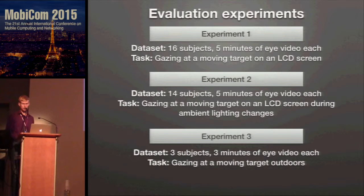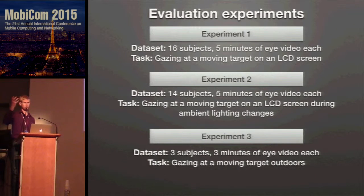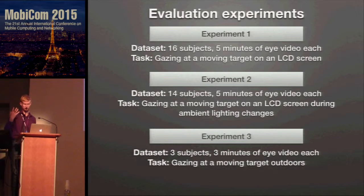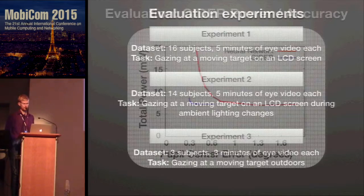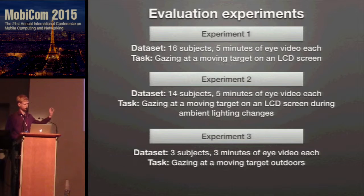For evaluation, we ran several experiments. The two main ones each had about 15 subjects with approximately five minutes of eye video per subject. The task was watching an LCD screen with a moving target to force eye movements. In the second experiment, we also varied the lights to force pupil dilation, proving the system works as eye appearance changes. The third experiment verified the system works in outdoor environments.